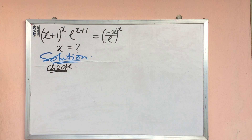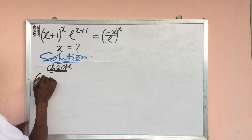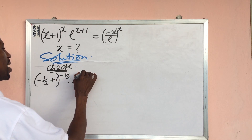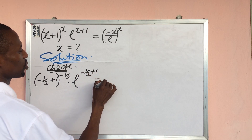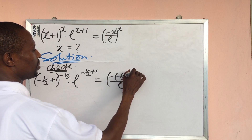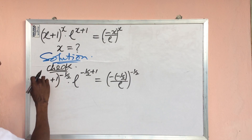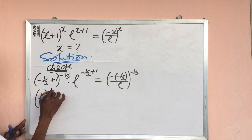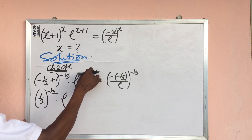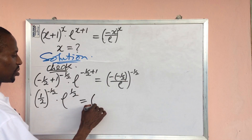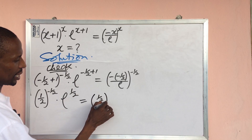Check: substituting x equals minus 1 over 2 everywhere. Left side: bracket open minus 1 over 2 plus 1 close bracket to the power of minus 1 over 2, dot e to the power of minus 1 over 2 plus 1. Right side: bracket open minus bracket open minus 1 over 2 close bracket close bracket all over e, to the power of minus 1 over 2. Carrying out the arithmetic, the base on the left becomes 1 over 2 to the power of minus 1 over 2, dot e to the power of 1 over 2. The right side becomes 1 over 2 close bracket all over e, to the power of minus 1 over 2.